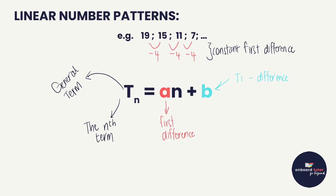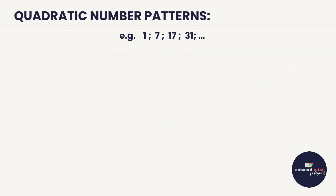Now let's look at how things change in grade 11. Consider the number pattern: 1, 7, 17, and 31. To find the differences: 1 plus 6 equals 7, then 7 plus 10 equals 17, and 17 plus 14 equals 31. The first difference is not constant, so we need to move on and determine whether there is a constant second difference.